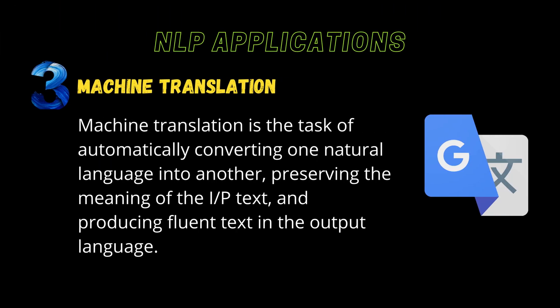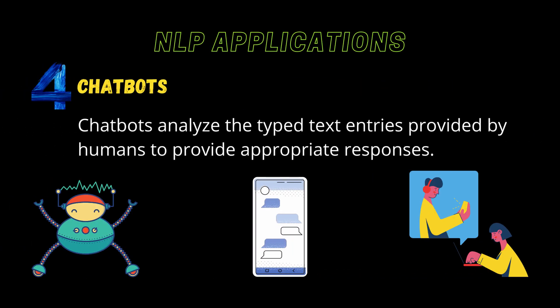Machine Translation: Machine translation is the task of automatically converting one natural language to another. An effective machine translation algorithm accurately captures the meaning and tone of the input language and translates it to text with the same meaning to give the desired impact. Machine translation tools are making great progress in terms of accuracy. Google Translate is a commonly used machine translation tool. Chatbots: Many companies have deployed chatbots to help improve customer service, and the process behind this is NLP technology. Chatbots analyze text entries provided by humans to provide appropriate responses and learn from user input to improve themselves over time.